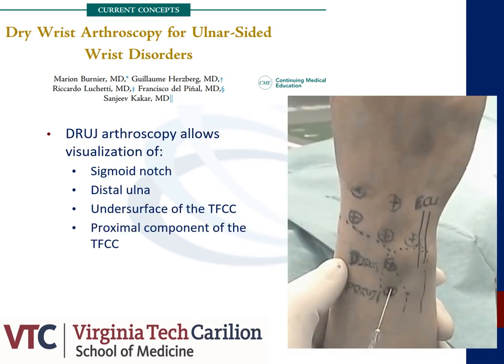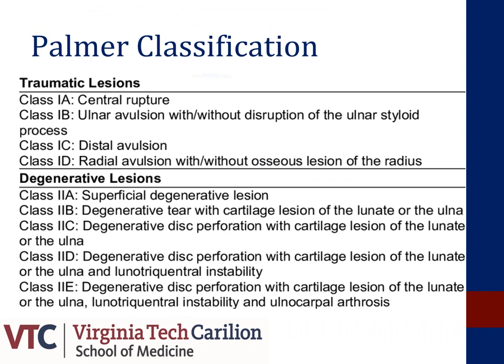Accessory portals allow for direct visualization of the DRUJ, enabling the surgeon to inspect the sigmoid notch, the distal aspect of the ulna, the undersurface of the TFCC, and the proximal component of the TFCC. Here is a table representation of the Palmer classification. For tears within the TFCC, we will be focusing on the traumatic lesions represented as class 1A through D. Treatment of TFCC tears is dependent upon the type and location of the tear.